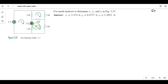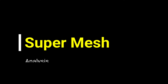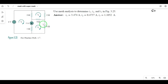In case two meshes share a current source, this is super mesh analysis. If you observe this circuit, you have a current source shared by mesh 1 and mesh 2. Don't bother about the 1 ohm resistor in series with the current source — you will neglect this resistor because we already know the current flow of that branch.